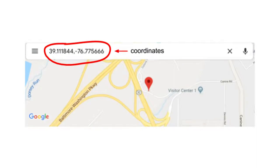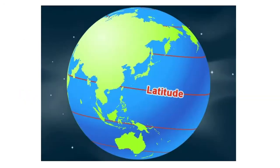Coordinates are linear and or angular quantities that designate the position of a point in relation to a reference frame. Latitude measures the north-south position between the poles. All of the red horizontal lines represent latitude.